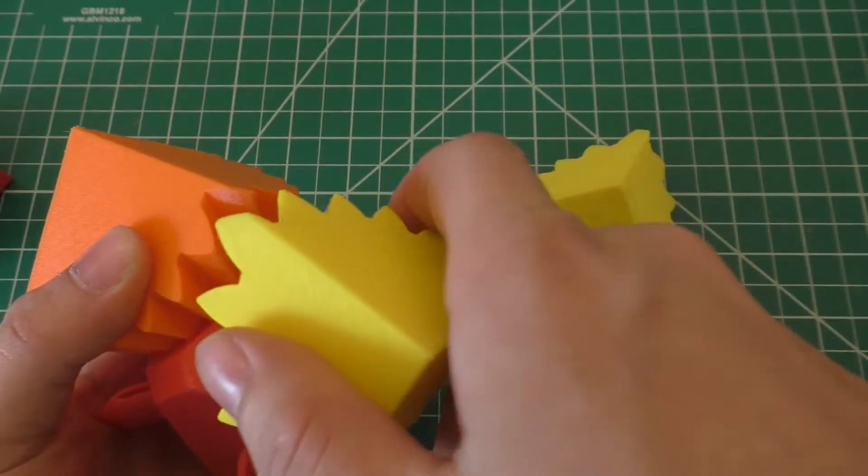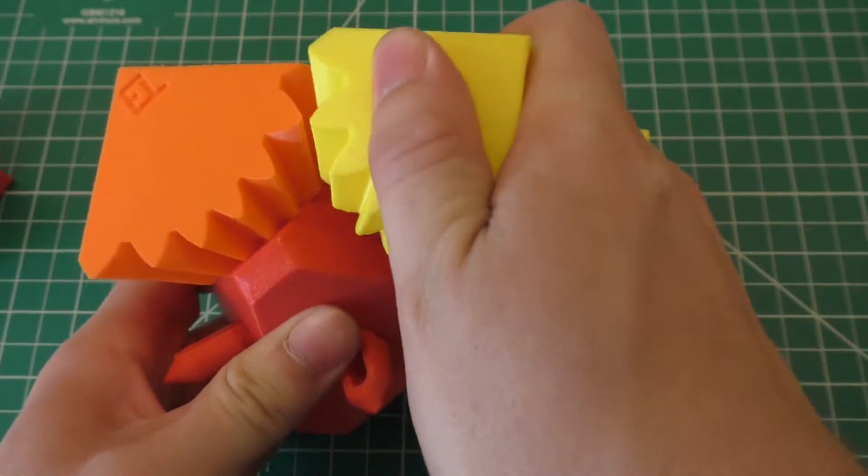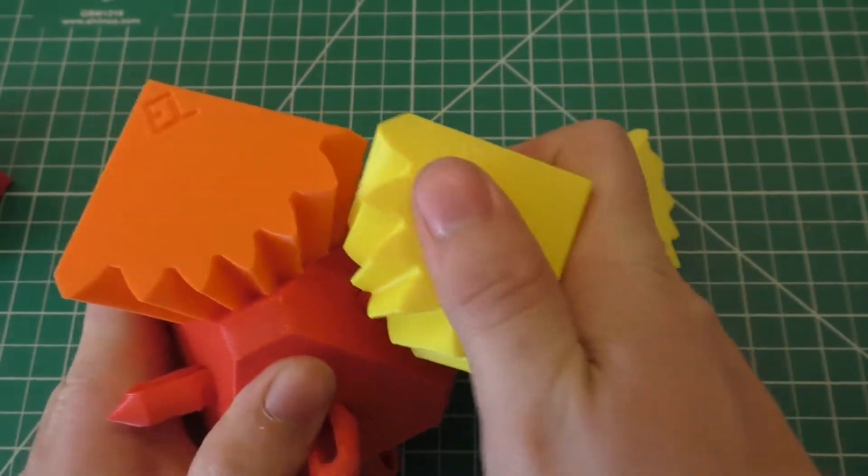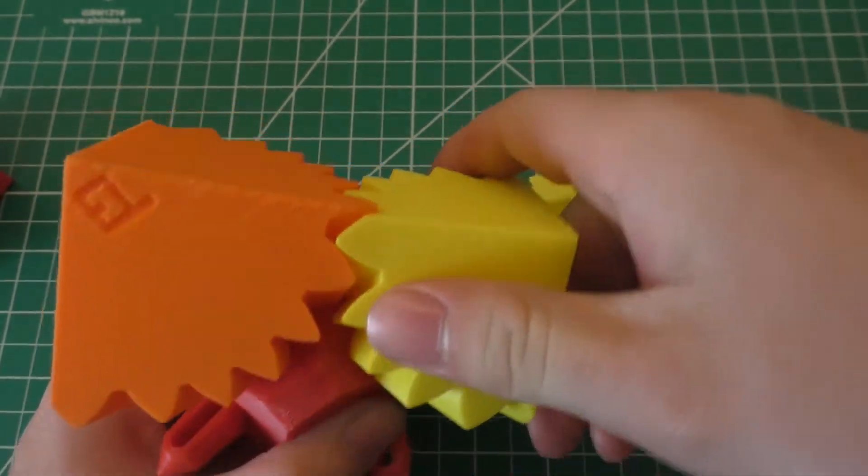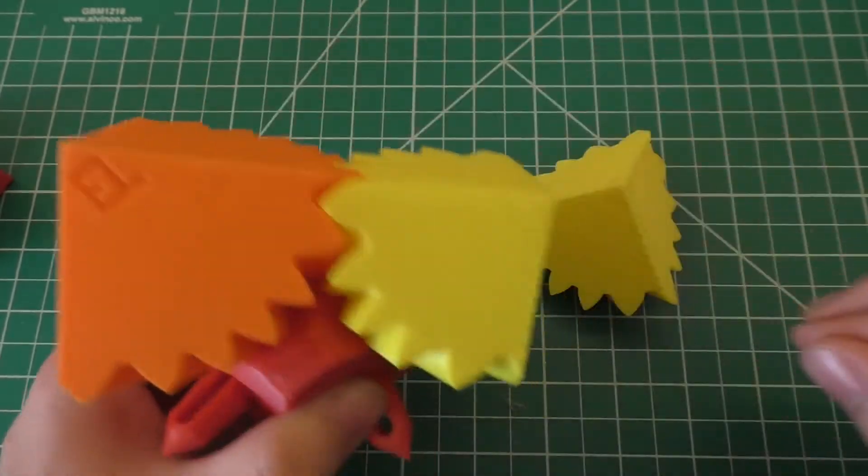And I've just got to line these up so that it looks like it's going to make a cube. So if I put this in here like so, there we go. All right, there's our first corner there.